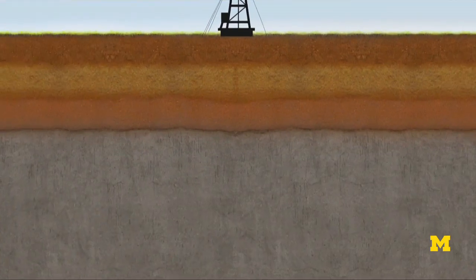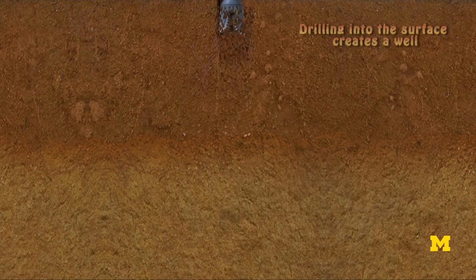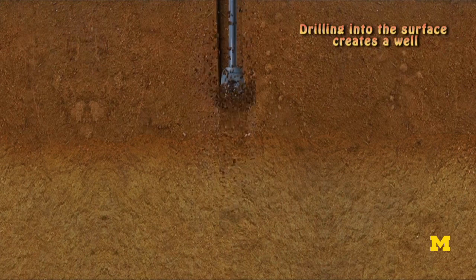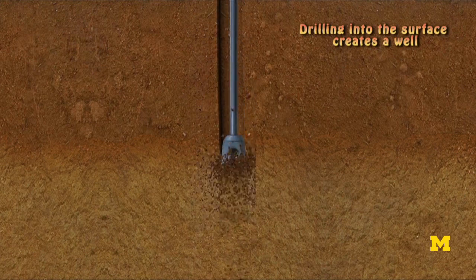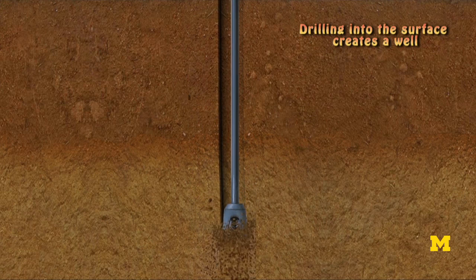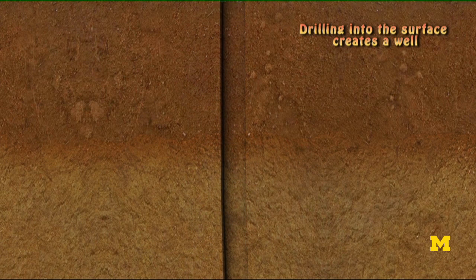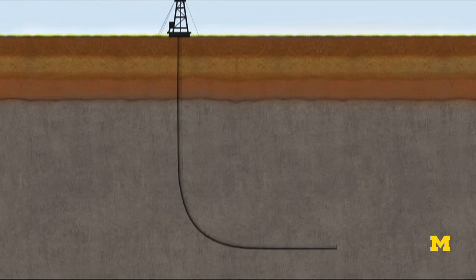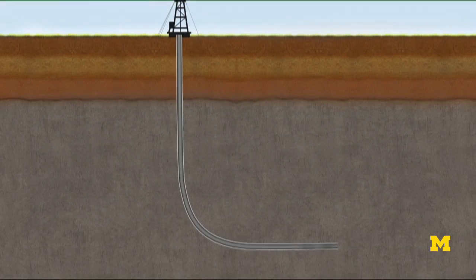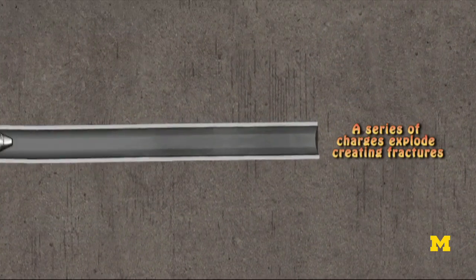Horizontal wells are actually drilled vertically from the surface and then slightly deviated to the point where you hit the target formation. You can actually drive the wellbore in a horizontal direction, which allows you to get at organic-rich shale layers that have entrapped gas.